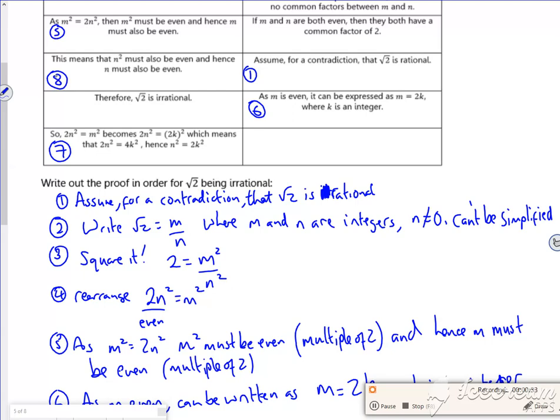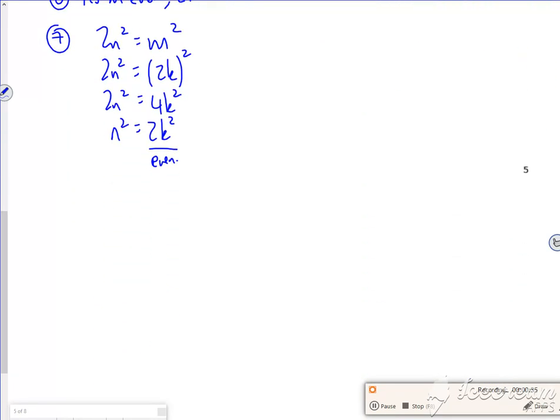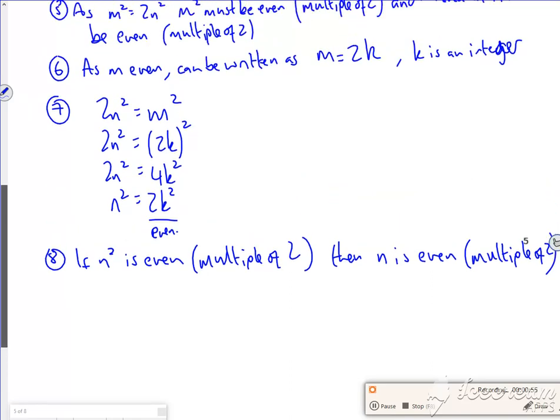So n squared is even, so n must be even. So this is what I'm saying here now. So if n squared is even, a multiple of two, then n is even. So I'm putting the multiple of two bit to help you when you come to do the one with root three, because you end up with multiples of three.